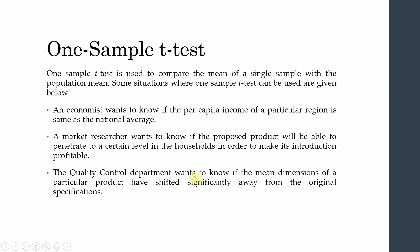The quality control department wants to know if the mean dimensions of a particular product have shifted significantly away from the original specification. During the production process, machines may behave erratically, causing product dimensions to change. You take a sample from the products being manufactured and compare those sample dimensions with the standard dimensions.